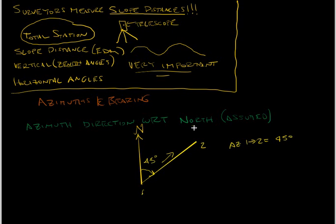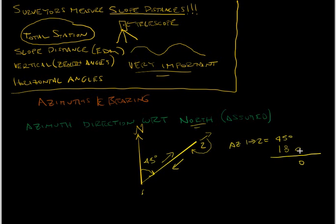Azimuths are usually measured off north, though they can also be measured off south. To get an azimuth from two to one, we add 180 degrees, because this angle is 180 degrees to start going the other way. So adding 180 to 45 gives us 225 degrees. The azimuth from two to one is equal to 225 degrees.